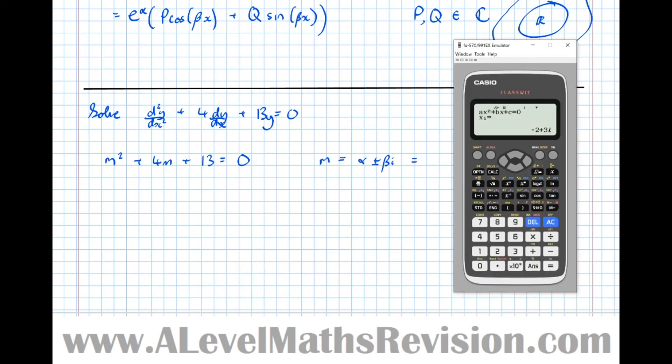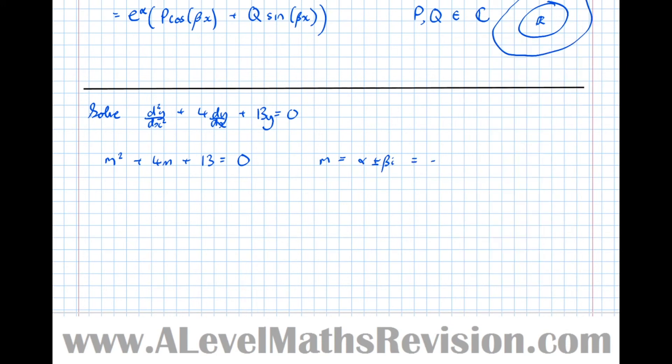Which in this case was -2 ± 3i. So we've got α = -2 and β = 3. Therefore, the solutions are y = e^(-2x) (A sin(3x) + B cos(3x)). And that's that. That's it done.